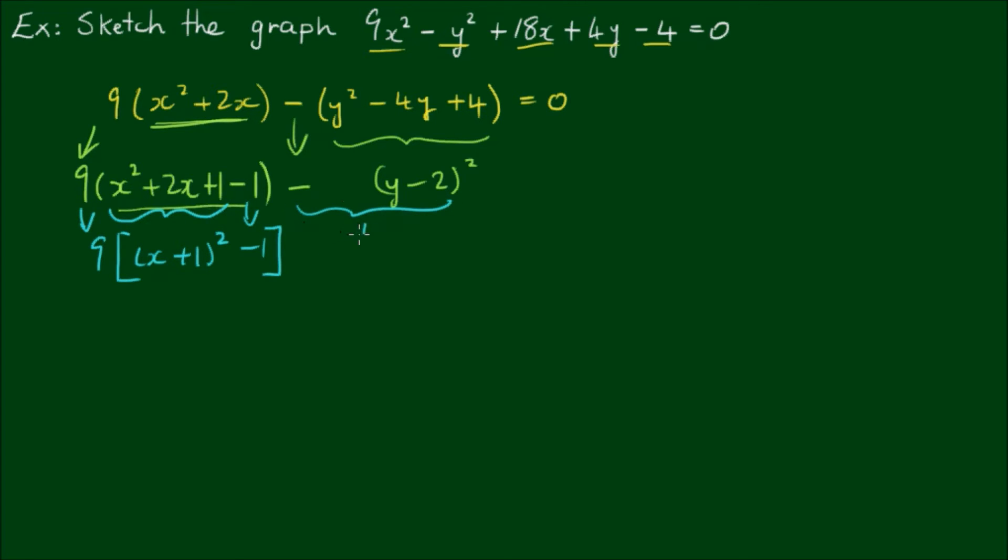And the rest of this, let's copy that down. So we have 9[(x + 1)² - 1] - (y - 2)² = 0.